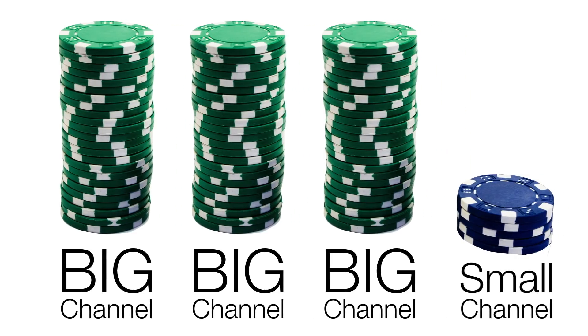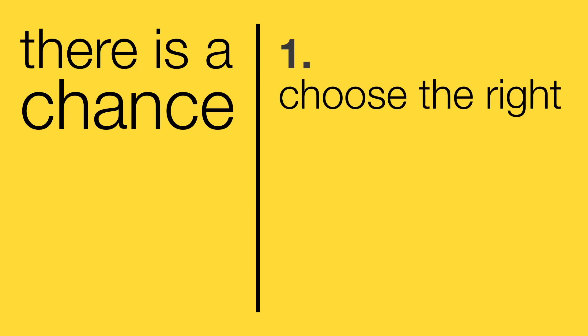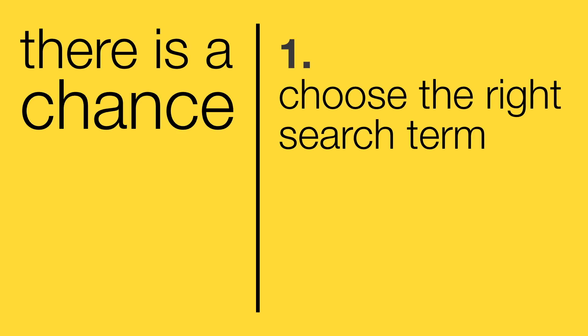Let's imagine that a small channel would join the game. It has very low ranking power and thus only a few chips to play with. Can the small channel win the game and rank higher for 'how to rank YouTube videos' than the big channels? Well, for this super competitive search term the small channel has basically lost the game from the start. But by playing it smart there is after all a chance. The trick is that you choose the right search term where you actually can get your foot in the door despite the high competition, and then you go all in.